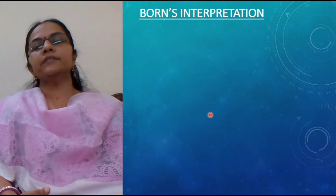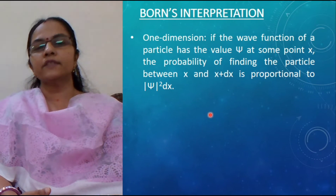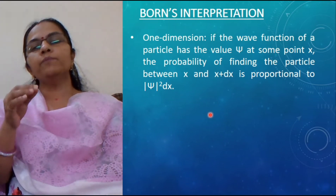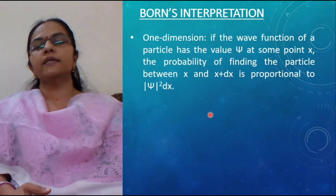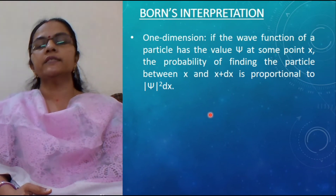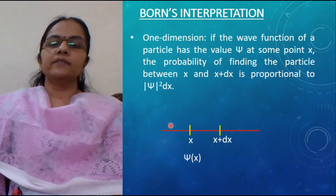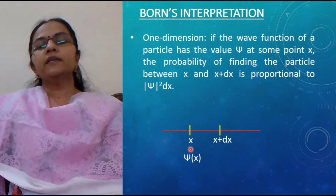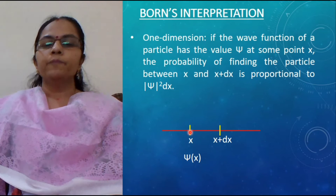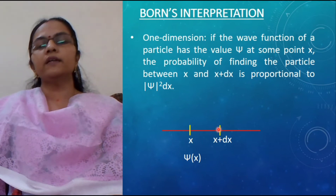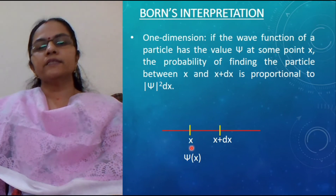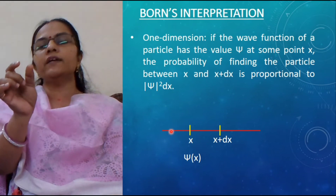Now we see Born's interpretation in one dimension. In one dimension, it states that if the wave function of a particle has the value psi at some point x, the probability of finding the particle between x and x plus dx is proportional to |psi|² dx. Let us understand this. The wave function at point x is represented by psi(x). Then the probability of finding the particle in the small interval between x and x+dx equals |psi|² dx, where psi is the wave function at the point x — this is a small interval across the point x.